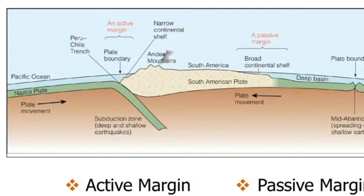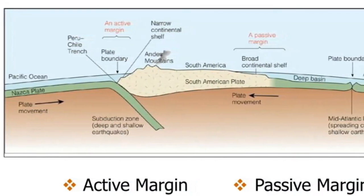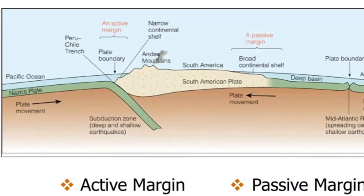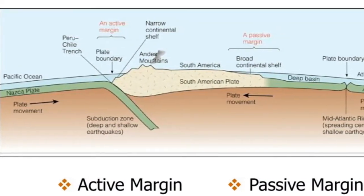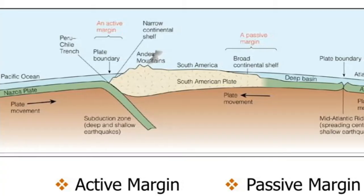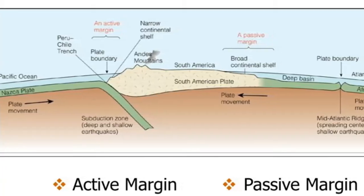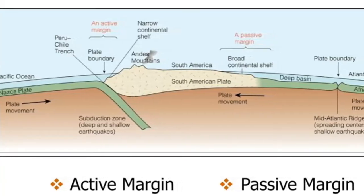Two main types of continental margins have been identified: passive and active.